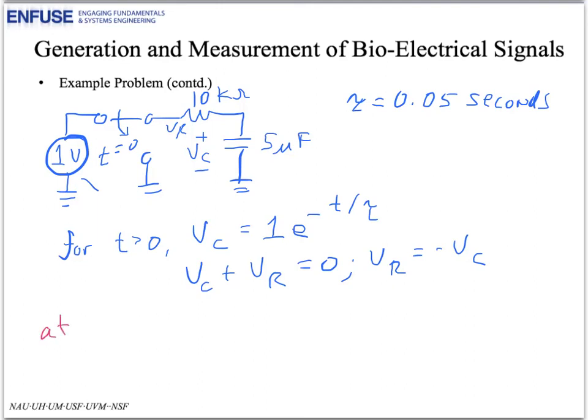So, if we look at T equal to 1 second, we get V sub C is equal to 1 times E to the minus 1 over 0.05, which is 1 E to the minus 20 volts.